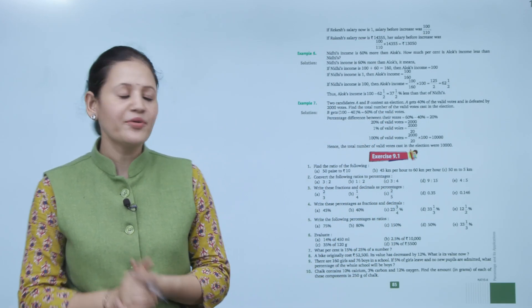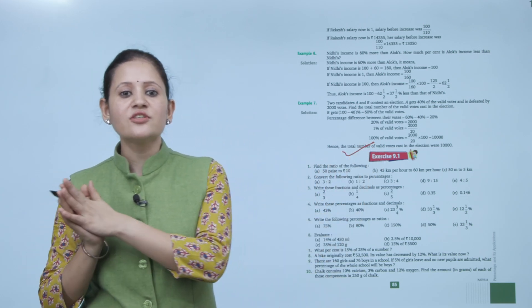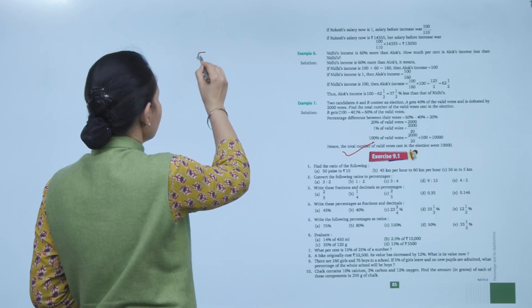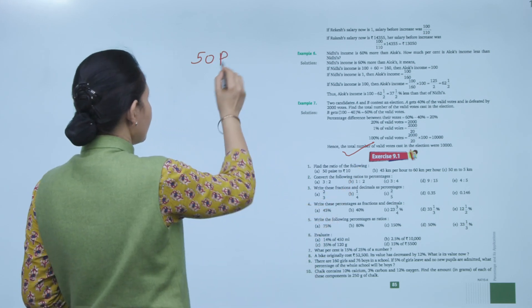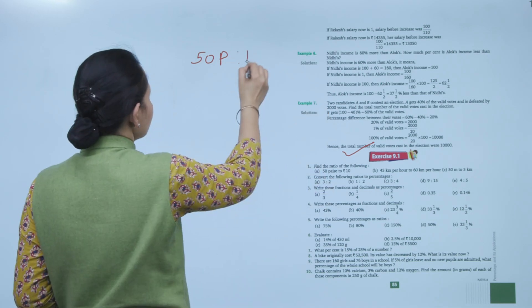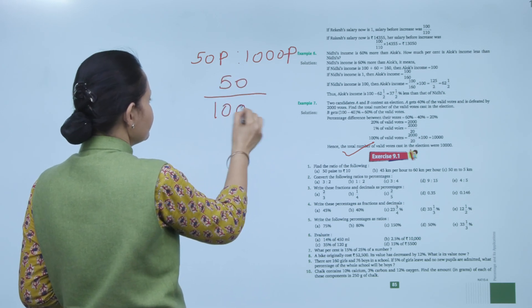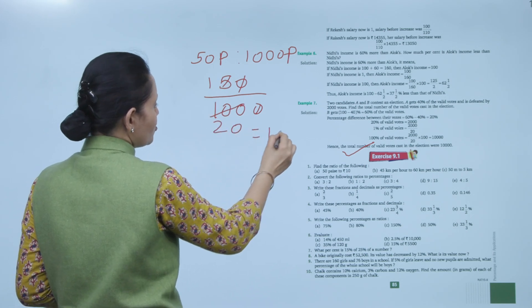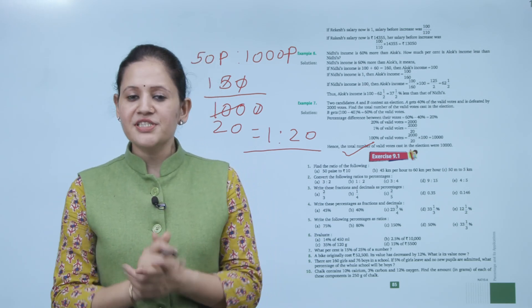Next is Exercise 9.1. Find the ratio of 50 paisa to Rs. 10. First convert to the same unit: Rs. 10 = 1000 paisa. Ratio = 50/1000 = 1:20. You should practice all the questions of this exercise.